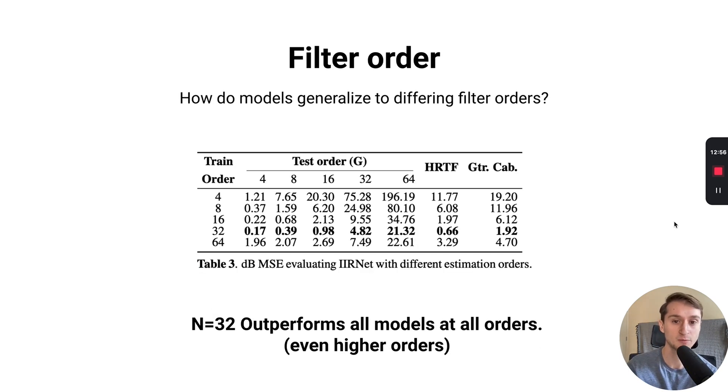In our last experiment, we looked at the filter order and how it impacted generalization to different filter orders. In this case, we trained one model only on filters of a certain order from 4 to 64. During evaluation, we test each of these models on filters from different orders and the same during training. Interestingly, we find here that our 32nd order model performs best across all orders during inference, even ones higher than it saw, in this case 64 during training, than the model that was actually trained with 64th order filters.